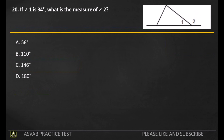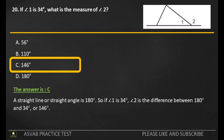Q20. If angle 1 is 34 degrees, what is the measure of angle 2? A: 56 degrees. B: 110 degrees. C: 146 degrees. D: 180 degrees. The answer is C. A straight line or straight angle is 180 degrees. So if angle 1 is 34 degrees, angle 2 is the difference between 180 degrees and 34 degrees, or 146 degrees.